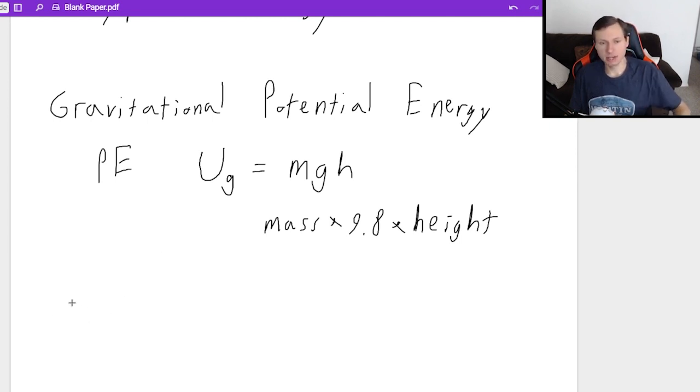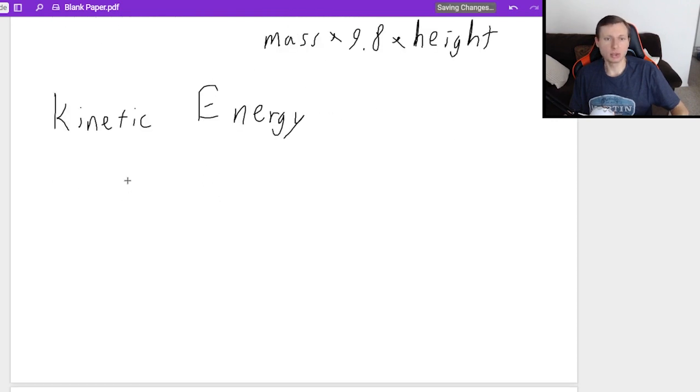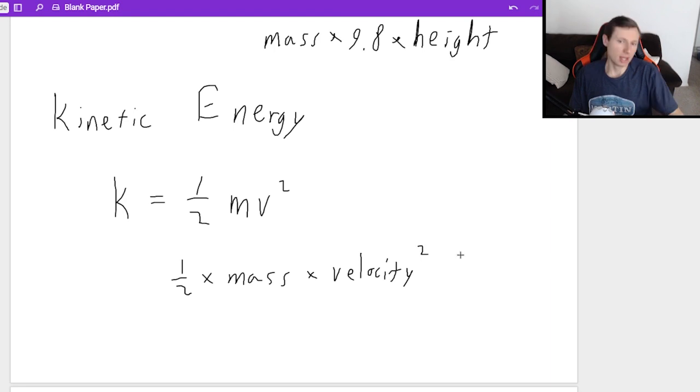The second kind of energy is kinetic energy. This is one of the most famous equations in all of physics. I usually see this written as K, and K equals one half mv squared, one half mass times velocity squared. Obviously you will have kinetic energy whenever you have a velocity, in other words, whenever you're moving.